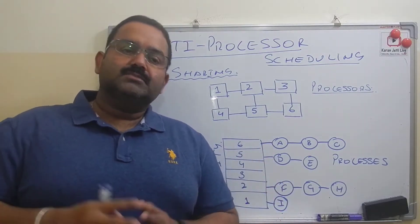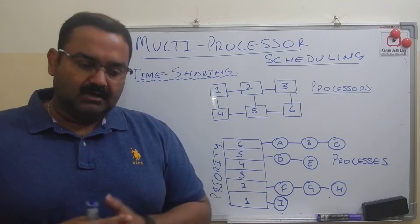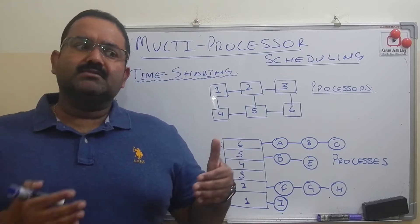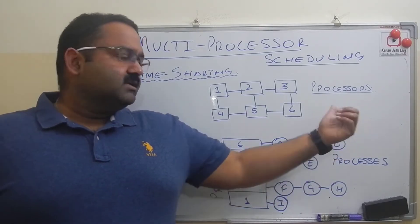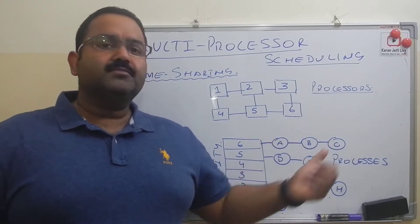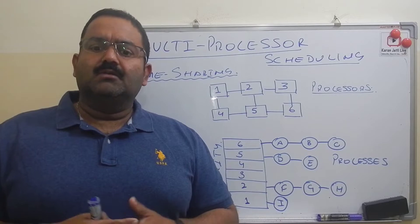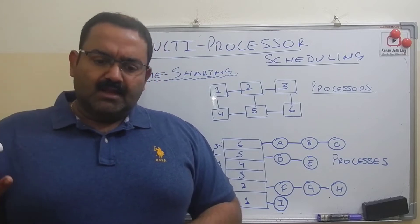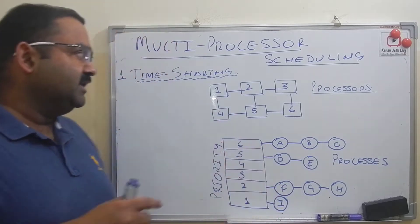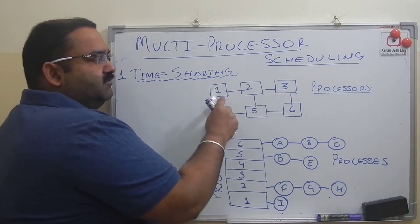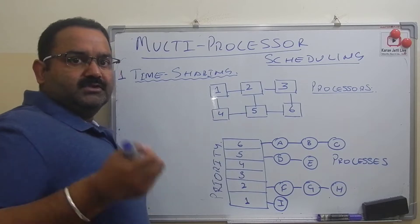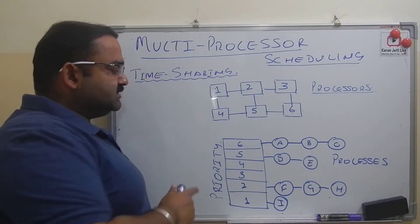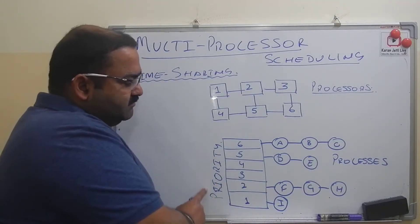The first scheduling algorithm is called the time sharing scheduling algorithm. Time sharing is a very simple scheduling algorithm. It is very similar to priority scheduling, and it is very effective when we have different processes which are not related to each other — meaning they are not part of the same program. In this case, scheduling is very easy to implement. We have multiple processors, and processes from A to I each have some priority.